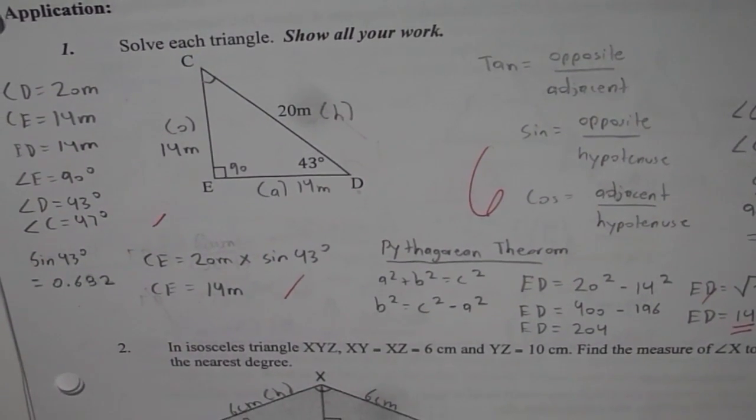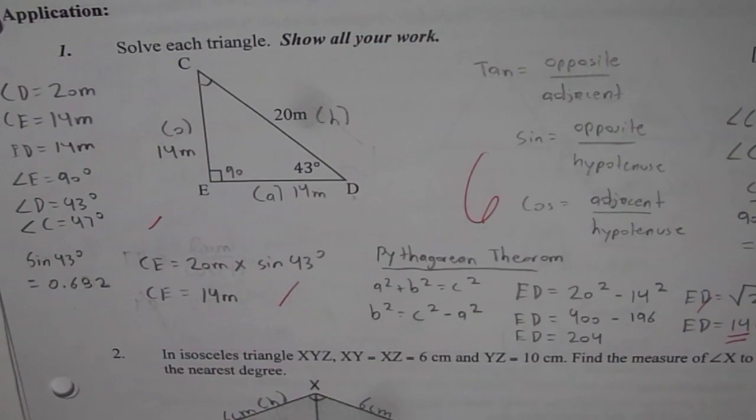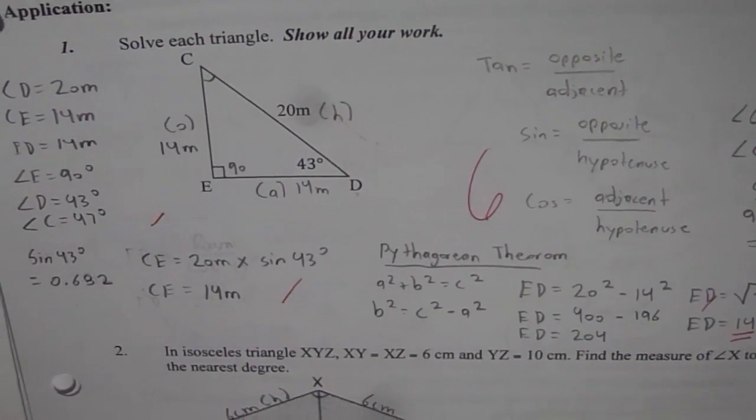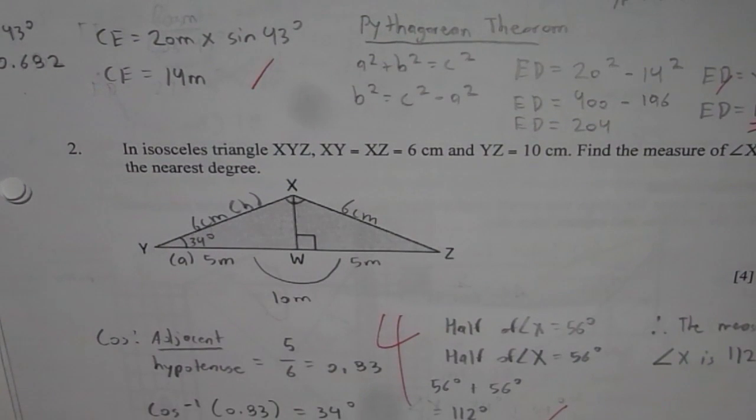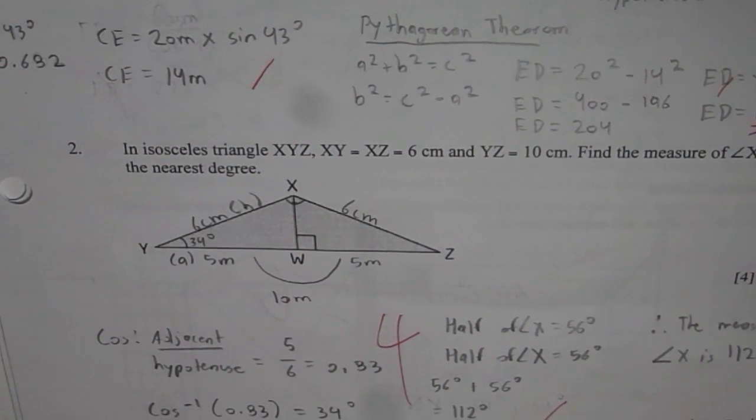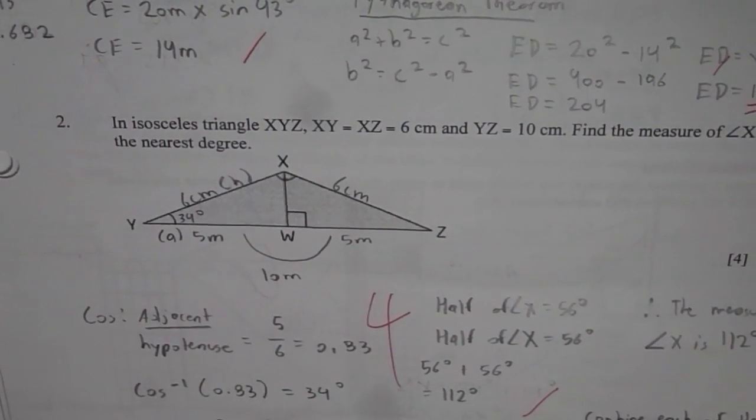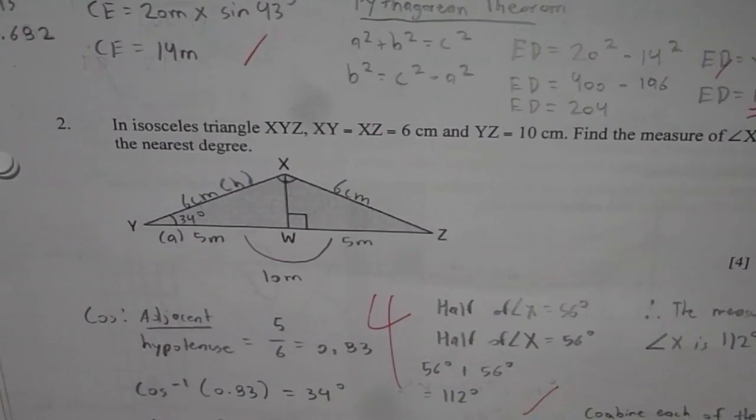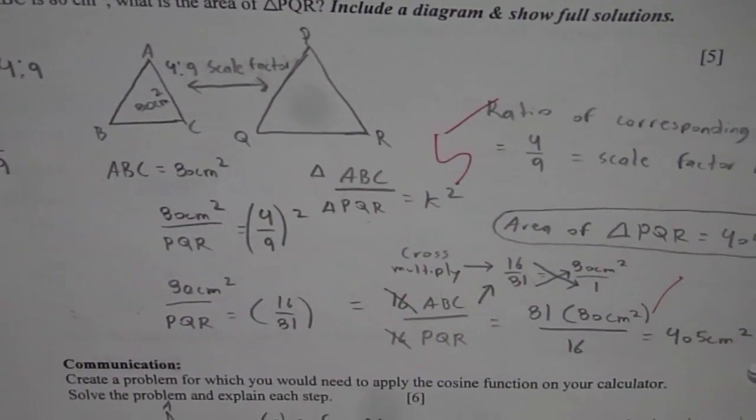Here are a few application questions. The very first one gives you a triangle and you need to solve this triangle. And the next one is an isosceles triangle where the side lengths are given to you and you have to find the missing angle to the nearest degree. So you can actually pause the video, copy this question and try it out. Let's move on to the next page where we have a few more application questions.